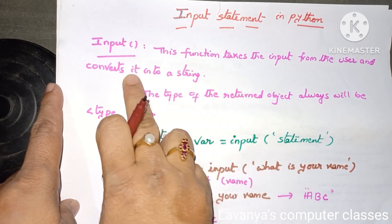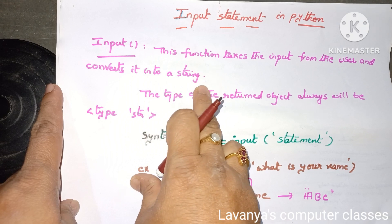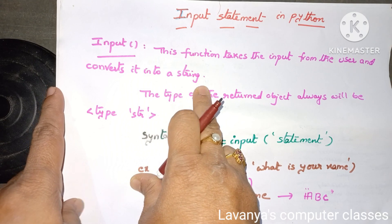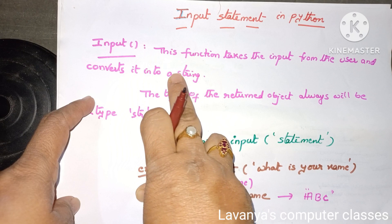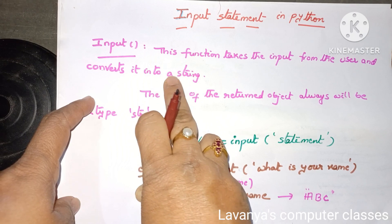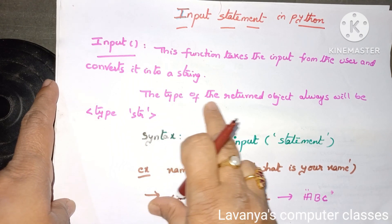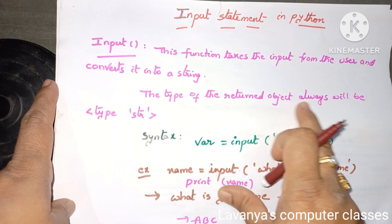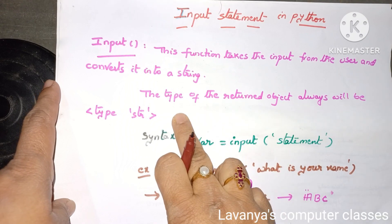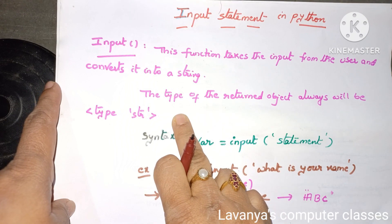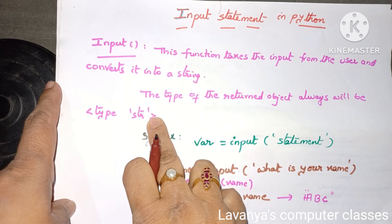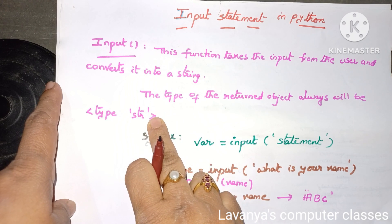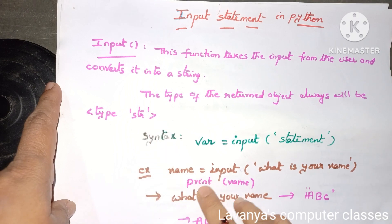One very important thing: the input function converts the entered value into a string. Whatever value is taken from the user, it is converted into a string. The type of the returned object is always the string data type. Whatever values are entered through the input command, everything is considered as string data type.